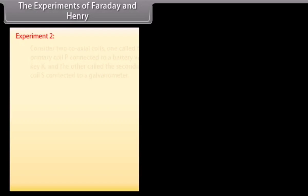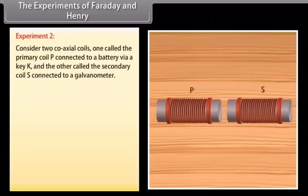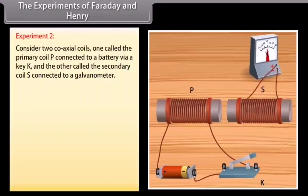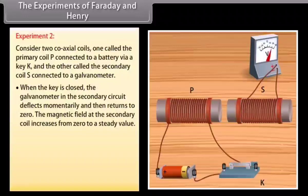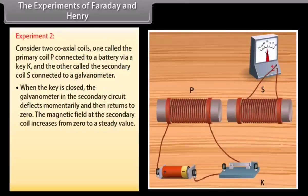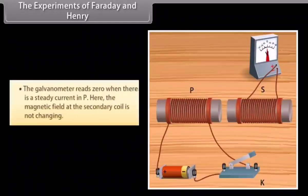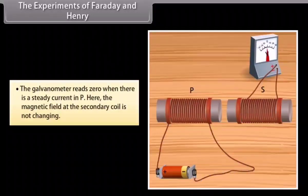Experiment 2: Consider two coaxial coils — one called the primary coil P connected to a battery via a key K, and the other called the secondary coil S connected to a galvanometer. When the key is closed, the galvanometer in the secondary circuit deflects momentarily and then returns to zero, as the magnetic field at the secondary coil increases from zero to a steady value. When the key is opened, the galvanometer deflects momentarily in the opposite direction and again returns to zero, as the magnetic field decreases from the steady value to zero. The galvanometer reads zero when there is a steady current in P, because the magnetic field at the secondary coil is not changing.